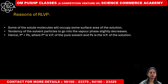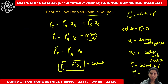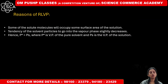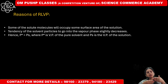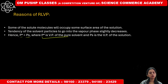Next, the reasons for relative lowering of vapor pressure: First, some solute molecules occupy part of the surface area of the solution, reducing the number of solvent vapors formed compared to pure solvent. Second, the tendency of solvent particles to go into the vapor phase slightly decreases because solvent molecules form bonds with solute particles and cannot move as freely. Hence P naught is greater than Ps.